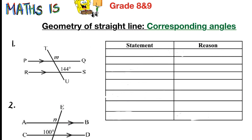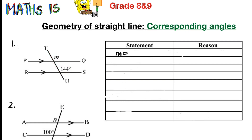Let's look at more examples. We have two parallel lines PQ and RS — shown by the arrows — and transversal TU. We are given the angle of 144° and need to find angle m. Using the F-shape, this angle and the 144° angle are corresponding, so m is equal to 144 degrees. The reason: corresponding angles equal because line PQ is parallel to RS.